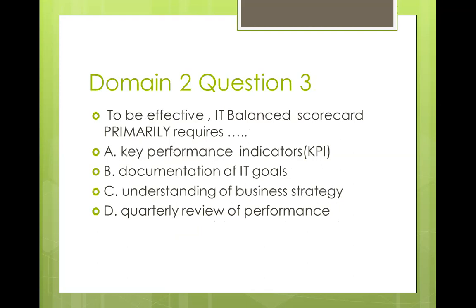Third question: to be effective, an IT balanced scorecard primarily requires A) key performance indicators, B) documentation of IT goals, C) understanding of business strategy, D) quarterly review of performance. Incidentally, all of them are correct, but the question says 'primarily.' For the IT balanced scorecard to be effective, the goals, KPIs, and performance objectives must be aligned to the business goals. So the best answer is C — we are giving IT goals that will help IT to achieve the business goals.